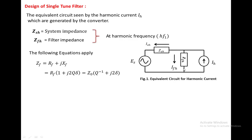The filter impedance can be written as RF plus j·XF, where RF is the resistance in the filter and XF is the reactance in the filter. This can be rewritten as RF·(1 + j·2Q·delta), and again as Z0·(Q^(−1) + j·2·delta).